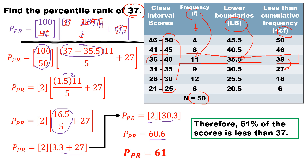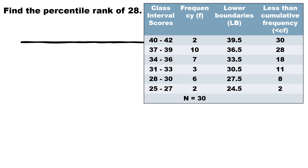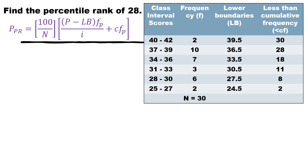Let us have another example. Find the percentile rank of 28. To start the substitution process, we need to set a point of reference by locating 28 in the class interval column. The class interval that covers 28 is 28 to 30, and this will be our point of reference.